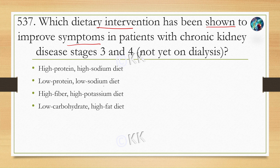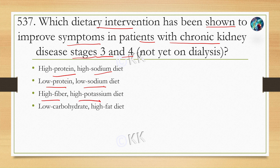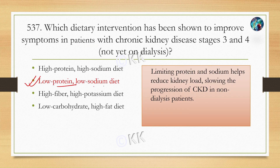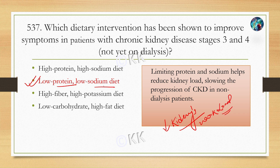Which dietary intervention has been shown to improve symptoms in patients with chronic kidney disease stages 3 and 4? Option A: high protein, high sodium diet, Option B: low protein, low sodium diet, Option C: high fiber, high potassium diet, Option D: low carbohydrate, high fat diet. The correct answer is Option B: low protein, low sodium diet, because the kidneys have difficulty excreting protein and sodium. Low protein, low sodium diet helps reduce progression of chronic kidney disease in non-dialysis patients.